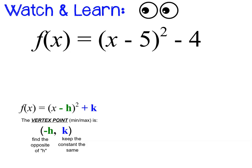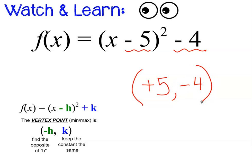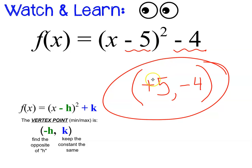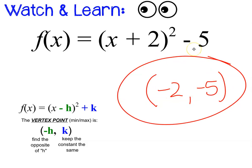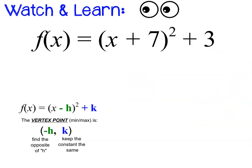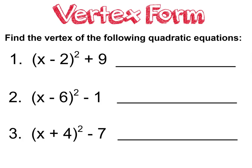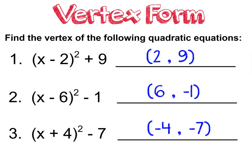Let's try another one. Take the number in the h-position and change its sign. Take the number in the k-position and keep it the same. That's the vertex — pretty simple. Let's try a few more examples. Take the h-value, flip the sign; take the k-value, keep it. Now let's check your answers on the three you tried on your own. How did you do? Okay, that was the easy part. Now let's get to the actual math.